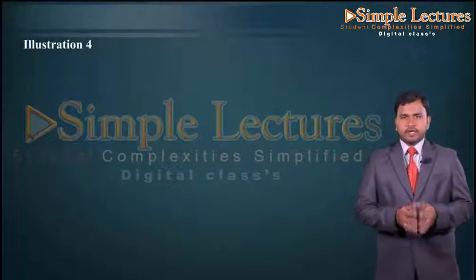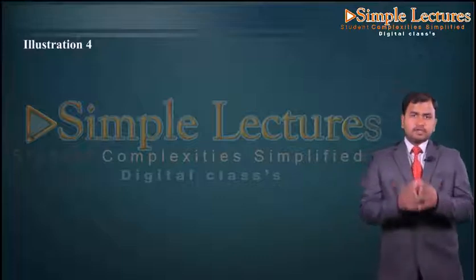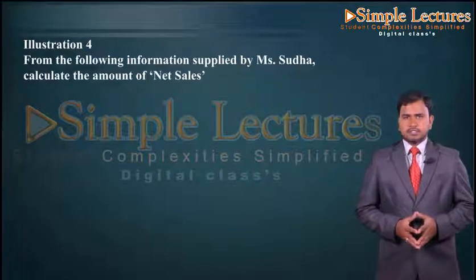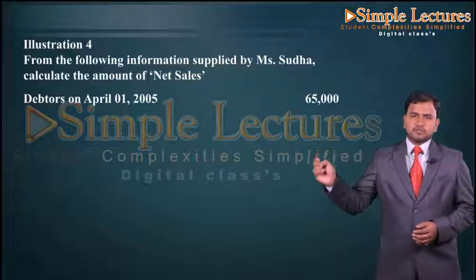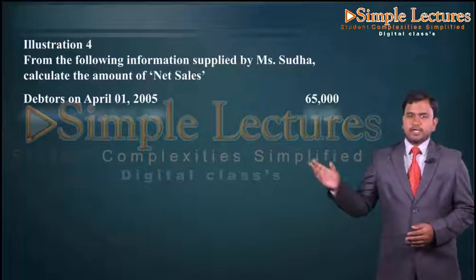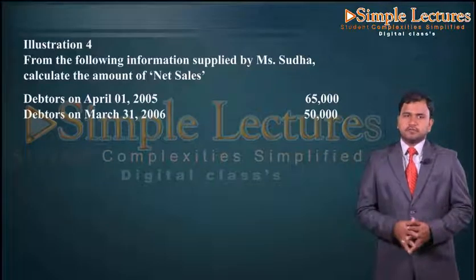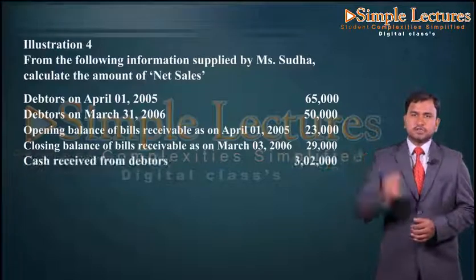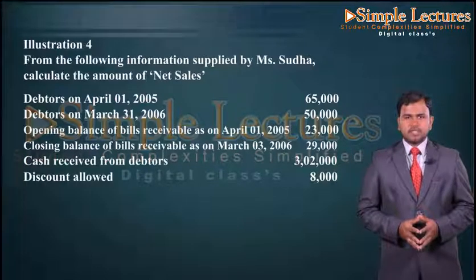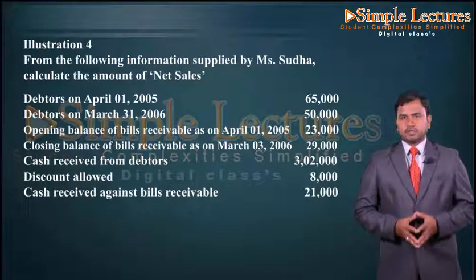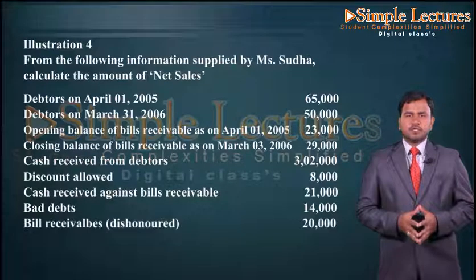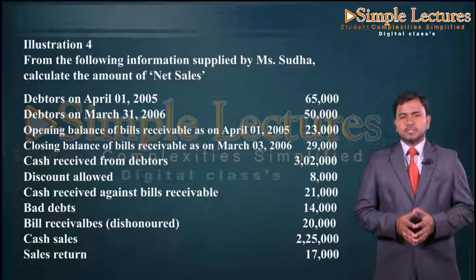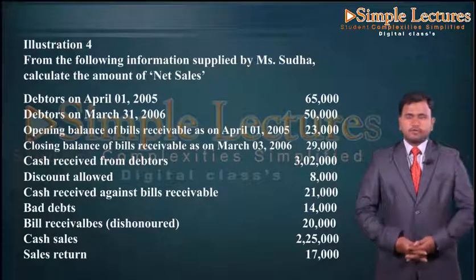Let us take another illustration where we have to find out the net sales, for which we have to prepare the total bills receivable account and total debtors account. The information is supplied by Sudha. Opening debtors as on April 1st 2005: sixty five thousand. Closing debtors as on March 31st 2006: fifty thousand. Opening balance of bills receivable: twenty three thousand. Closing balance of bills receivable: twenty nine thousand. Cash received from debtors: three lakh two thousand. Discount allowed: eight thousand. Cash received against bills receivable: twenty one thousand. Bad debts: fourteen thousand. Bills receivable dishonored: twenty thousand. Cash sales: two lakh twenty five thousand. Sales return: seventeen thousand.